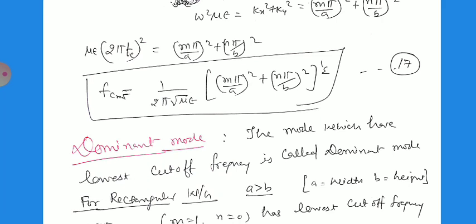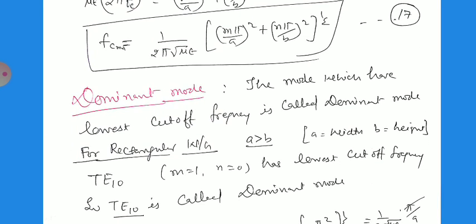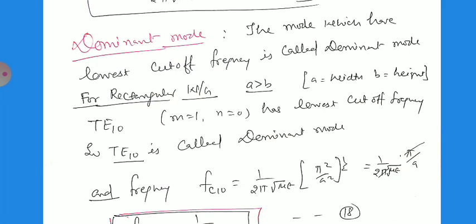Using the cutoff frequency formula we can identify the dominant mode. The dominant mode is the mode which has the lowest cutoff frequency. For the rectangular waveguide with width a greater than height b, the minimum value of n is 0 and m must be at least 1, so the minimum cutoff occurs at m equals 1, n equals 0. Therefore TE10 mode has the lowest cutoff frequency and is called the dominant mode.